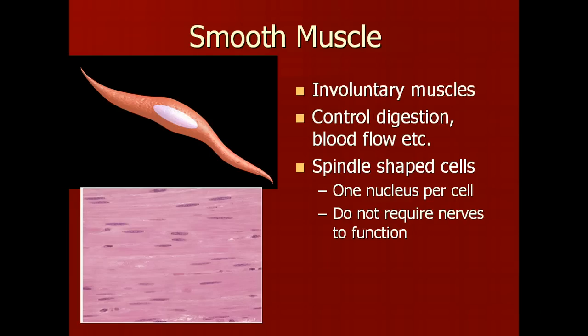Another type of muscle is smooth muscle. Smooth muscle is one of the two types of involuntary muscles found in the human body. Smooth muscles are used in a wide variety of functions, including controlling digestion and controlling the amount of blood flow to areas in your body. Characteristics of smooth muscle cells include spindle-shaped cells that have one nucleus per cell.